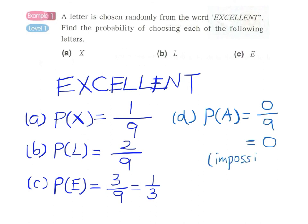An impossible event. That is, it is not possible for this event to happen—we cannot find the letter A in the word 'EXCELLENT'.